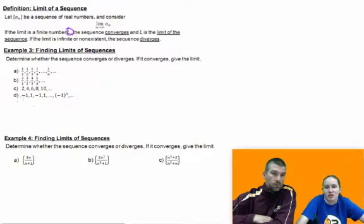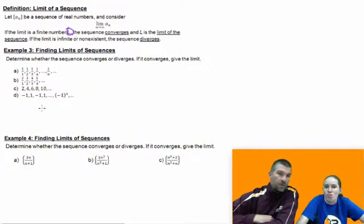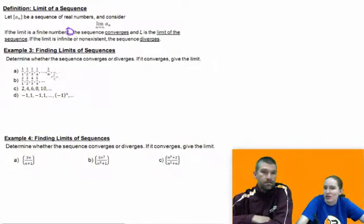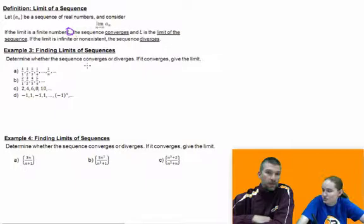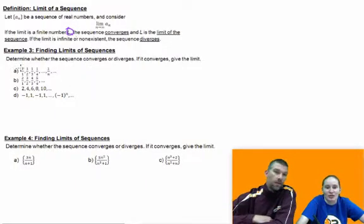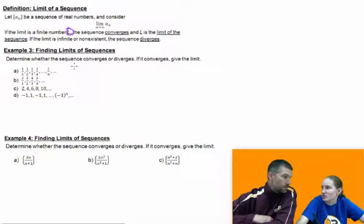So on these four sequences, we're going to figure out if they converge or diverge, and if they converge, we're going to give the limit. A converges. Okay. How do I know? I don't know. Okay. Well, let's look at it. I start with 1 over 1, which is just 1, 1 half, 1 third, 1 fourth. If I keep going, 1 fifth, 1 sixth, 1 seventh, 1 eighth.